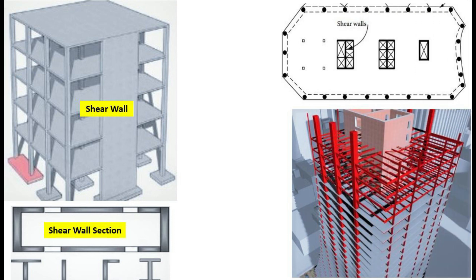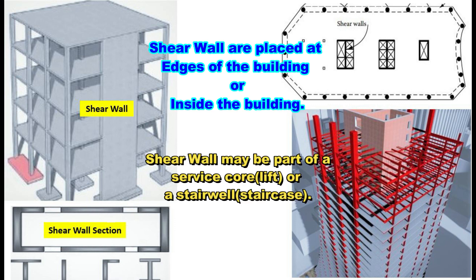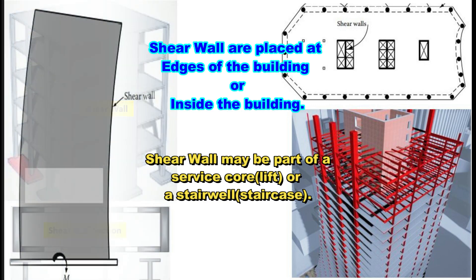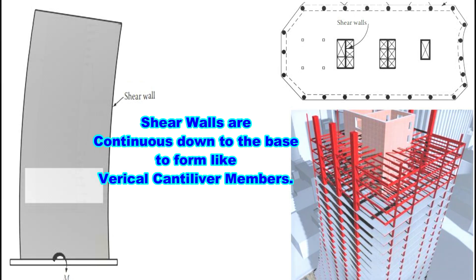Where we provide shear wall and why? Shear walls are placed at the edge of the building or can be placed inside the building. The shear walls may be part of a service core or a stairwell, meaning shear walls in the form of core wall or lift wall systems accommodate vertical translation systems such as stairs or lifts, or they may serve as partition between accommodations. Shear walls are usually continuous down to the base, to which they are rigidly attached to form vertical cantilever members.